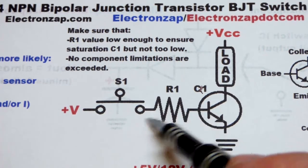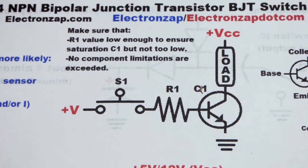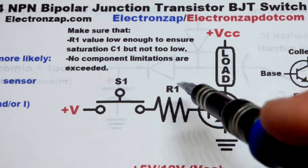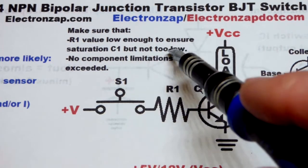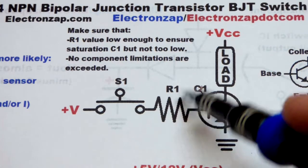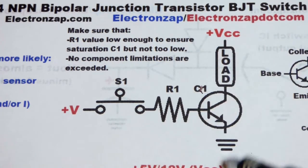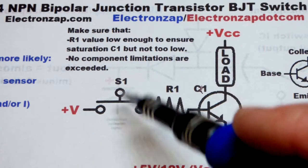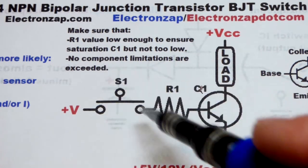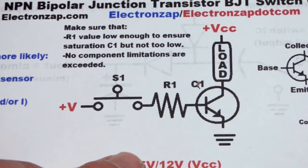It can be a high value resistor because you just need a little bit of current to control a large amount of current. You don't want it too low because you don't need much current, but you don't want to go too high or it will start limiting current. Make sure all your components can handle the power, voltage, and current you're going to apply.